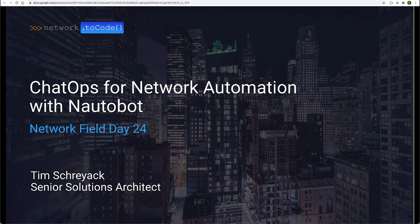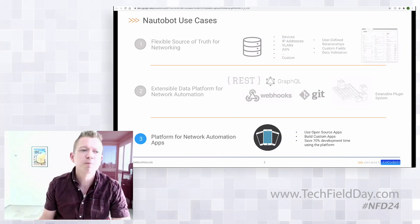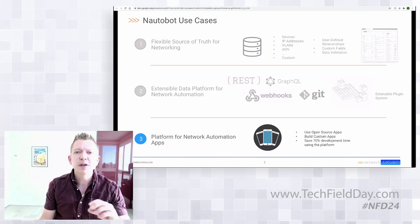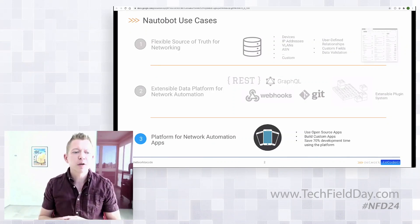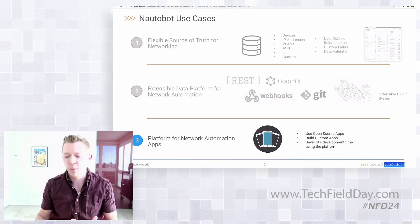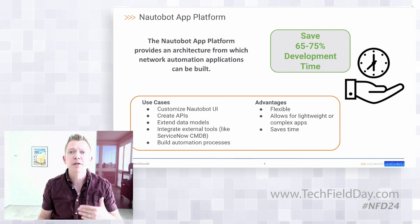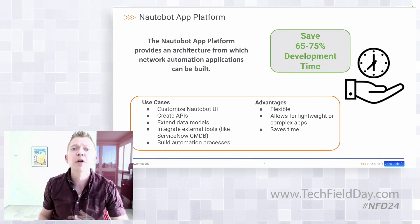Hopefully we can demonstrate today why ChatOps should be a first-class citizen and shouldn't be pushed off to the side as something we think about as an add-on feature. Specifically, we're going to be diving into Nautobot as a platform for network automation apps and our ability to use Nautobot to deploy and develop applications that we can extend past just the base functionality of source of truth.